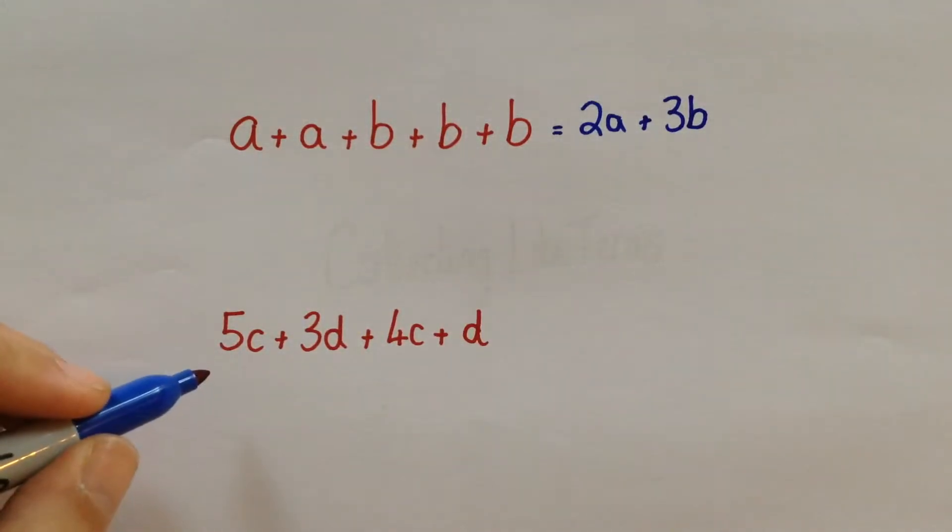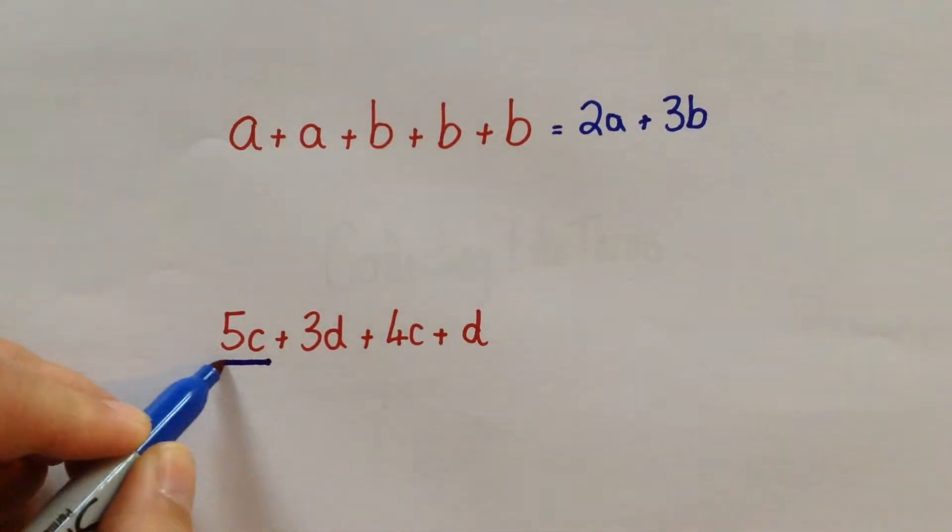For the second example, here we've got two different letters again, C and D. Treat them separately, do one at a time. So if we start with C, we've got 5C.